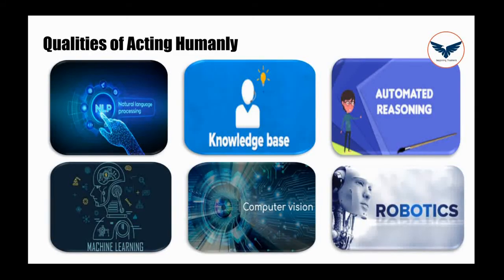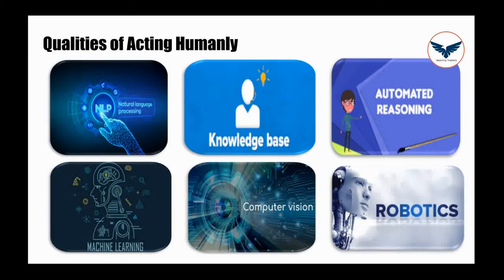Next one is robotics. Robotics in artificial intelligence is used to manipulate and move about. For example, if you build a machine to help blind people, then the machine should have proper functioning that a blind person doesn't have. These are the qualities of intelligent machines if it wants to act humanly.